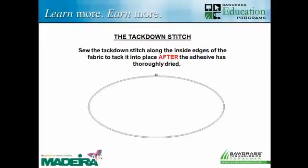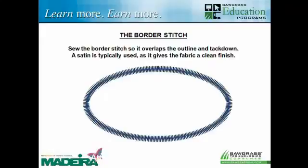After we've used some type of adhesive — whether a spray-on or other products from Madeira — we place the fabric down, and then we sew what we call the tack-down stitch. You can see on the screen that the tack-down stitch is just inside of the outline stitch — another running stitch that runs around the edge and tacks it down firmly in place. Then we put down our final border stitch. I made it a satin stitch here, which gives it a clean finish. Those are our three basic steps: outline, tack-down, and border, using adhesive to hold the fabric in place permanently.